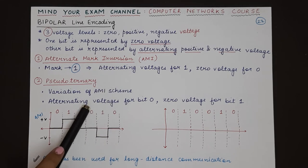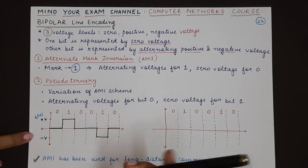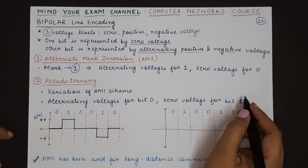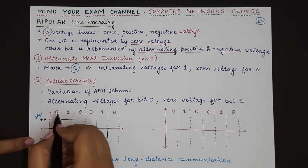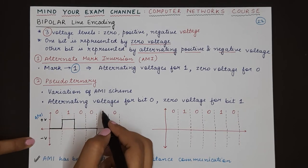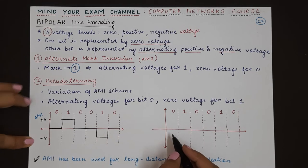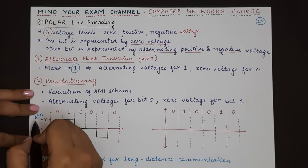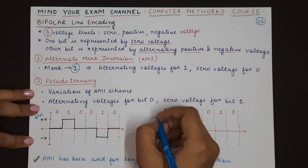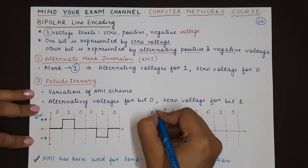Here we use zero voltage to represent one, and alternatingly positive and negative voltages are used for representing bit zero. If we represent the same data that was used for AMI, in this case pseudoternary,